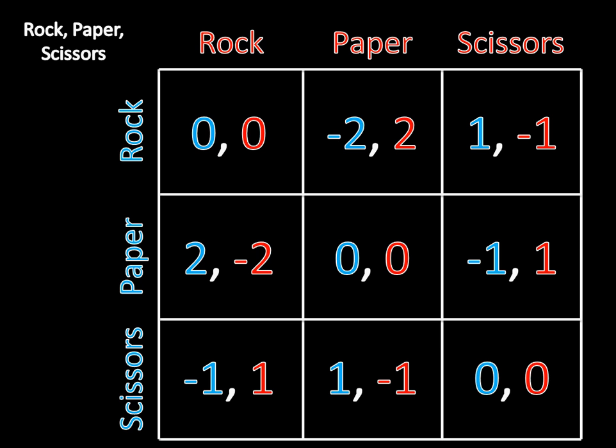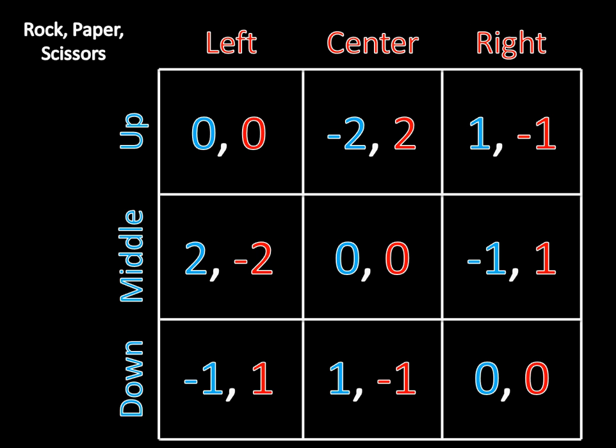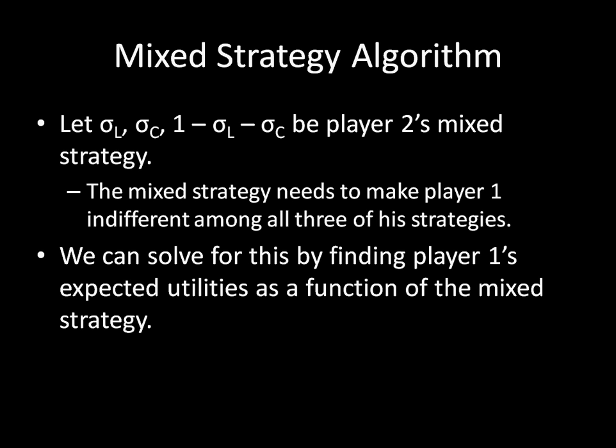As we're solving for this mixed strategy Nash Equilibrium, it will be easier if, instead of looking at rock-paper-scissors, we differentiate the names. So we're going to be looking at up, middle, and down for player one, and left, center, right for player two. As we're solving for this mixed strategy, we need to define it. So what's going to happen here is we're going to let sigma-left, sigma-center, and one-minus-sigma-left-minus-sigma-center be player two's mixed strategy.